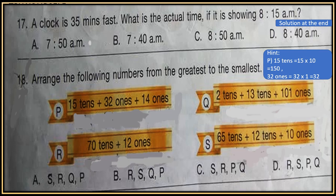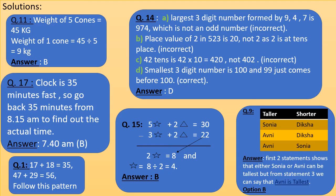Question 18: Arrange the following numbers from greatest to the smallest. You can use the hint given here. Check solutions of some questions here. Check the answer.